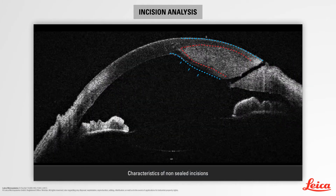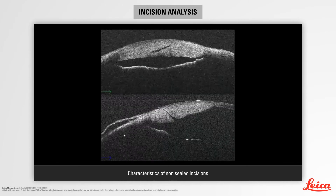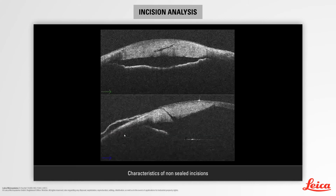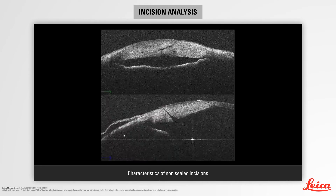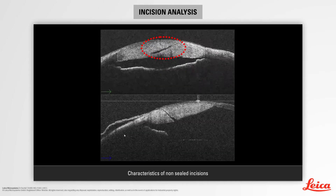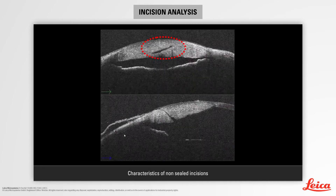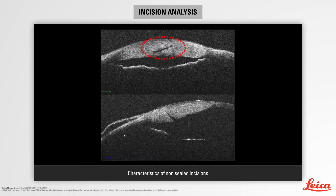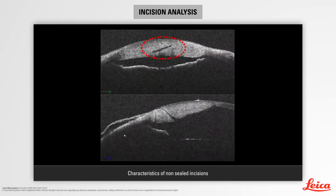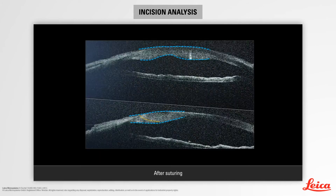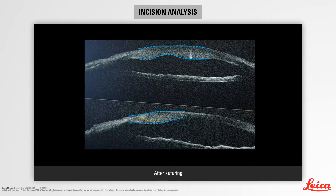In this case, despite the hydrosurter, the path of the incision remains visible. It is interesting to make a transversal section. In this case, we observe that the incision architecture is inclined. That explains why the incision was not sealed. When suturing a non-sealed incision, its path becomes invisible.